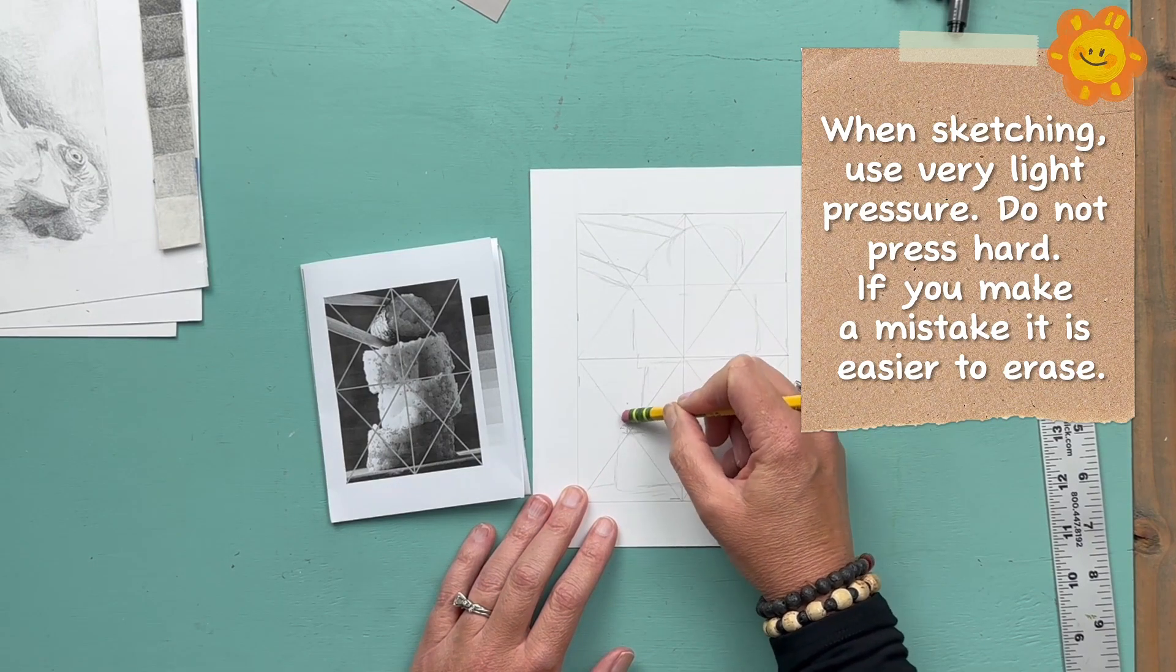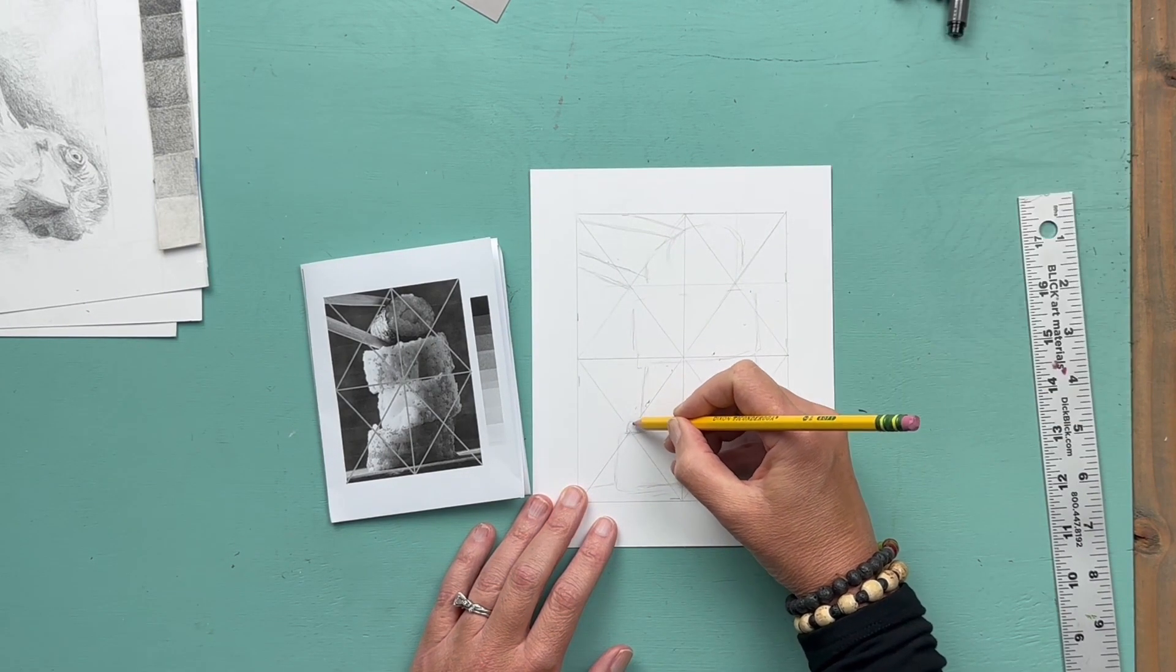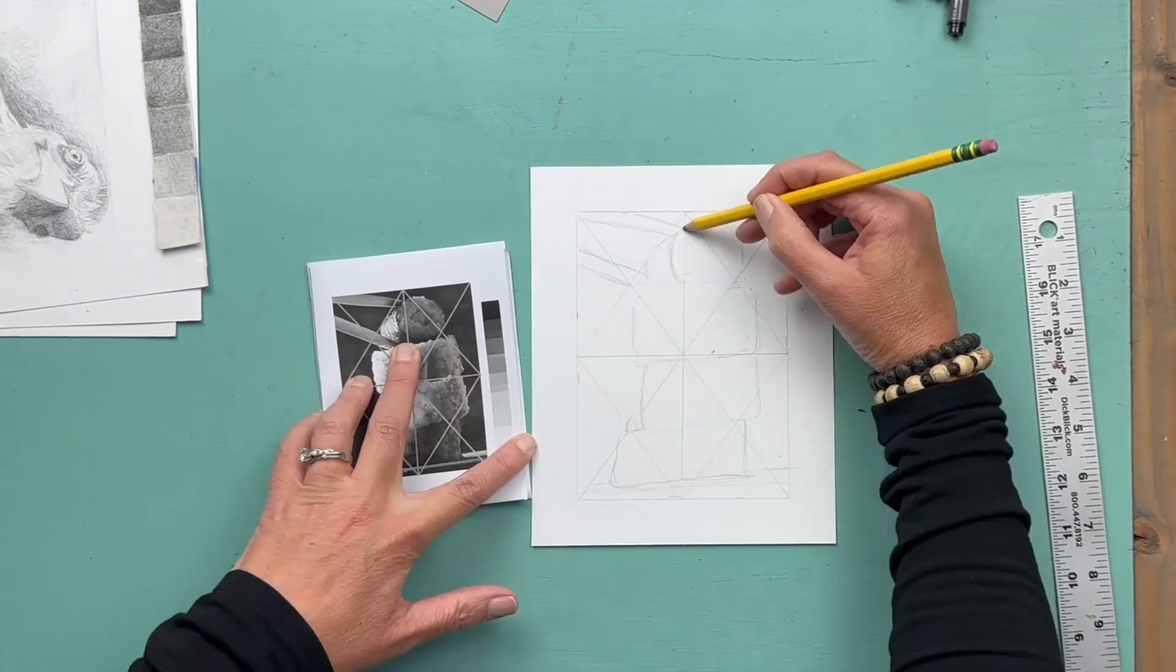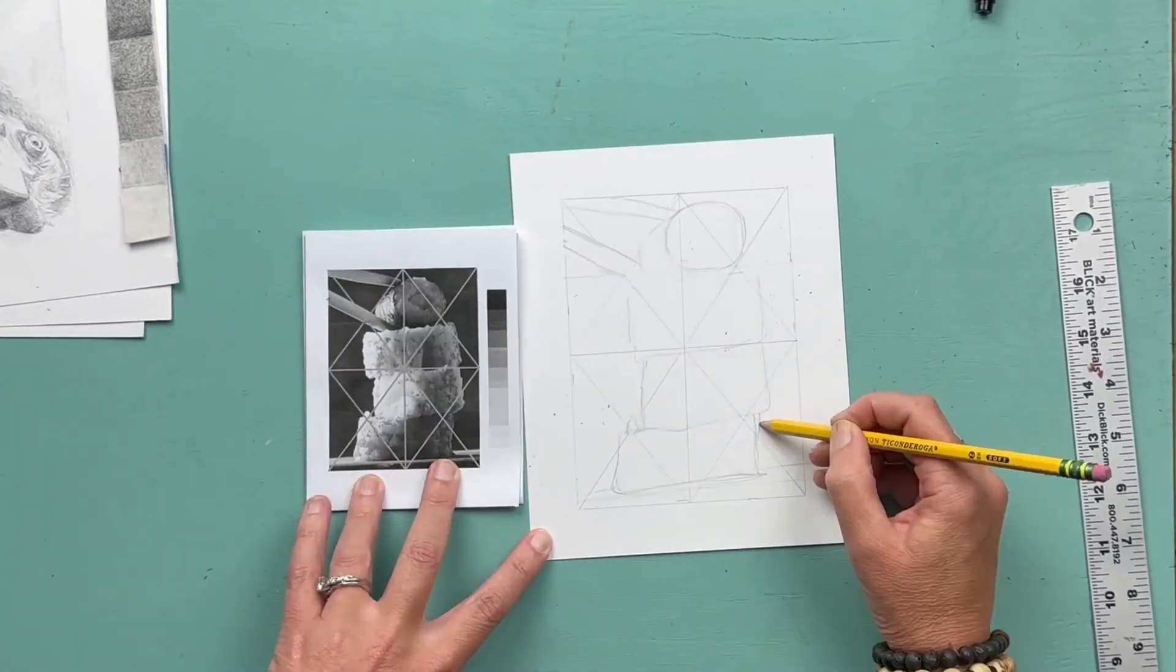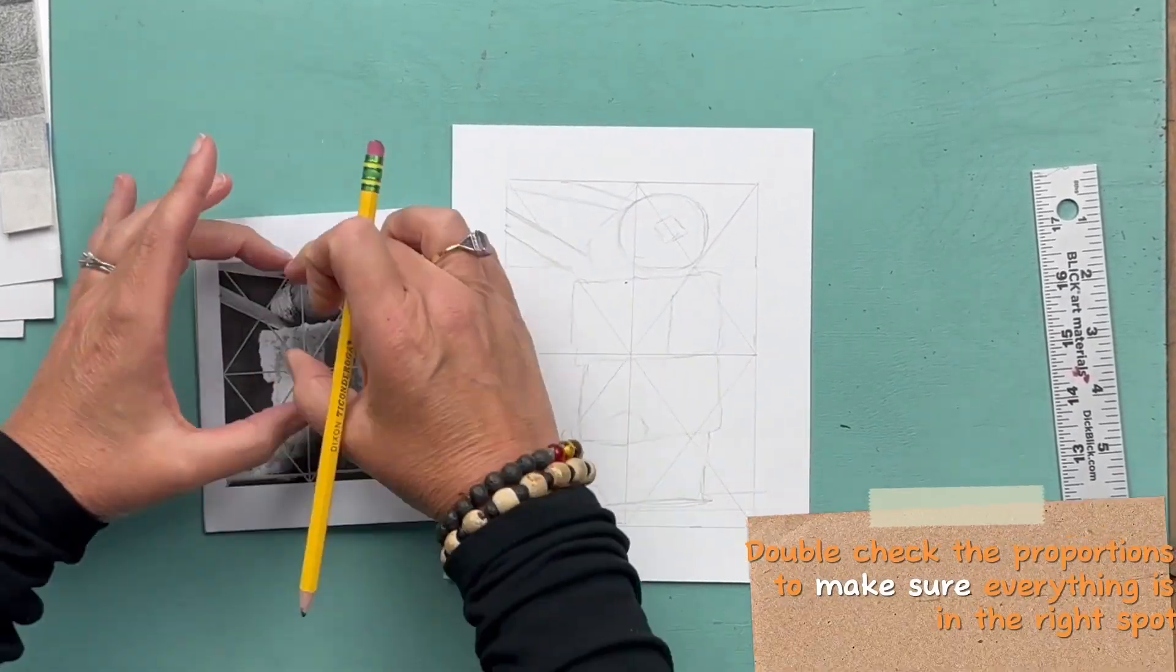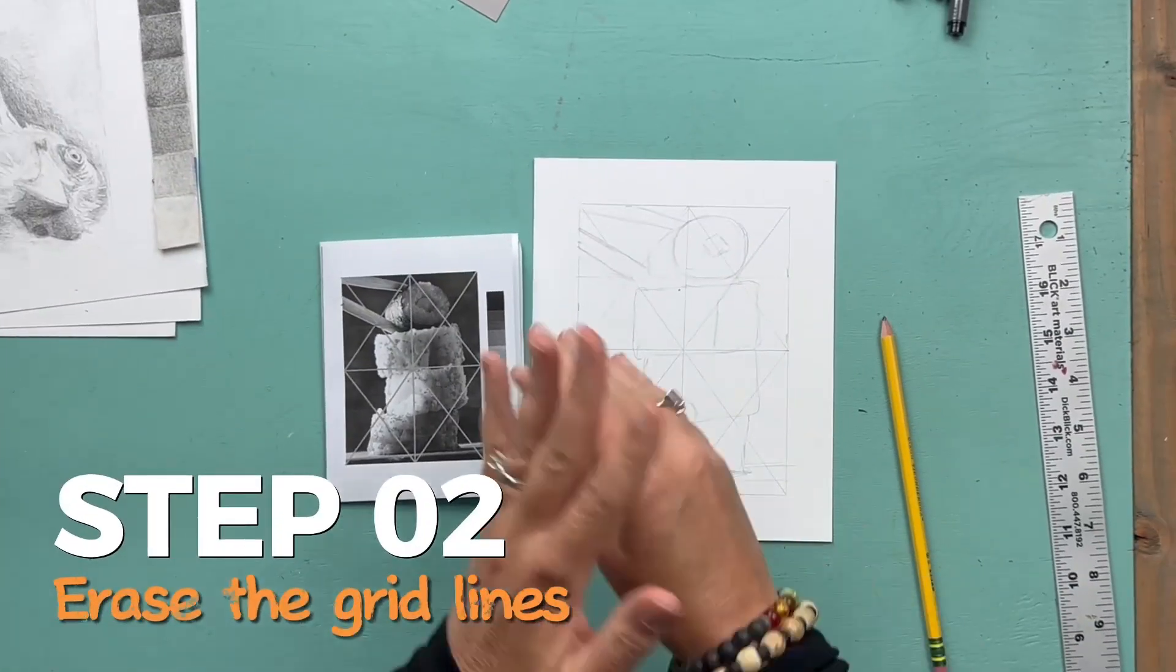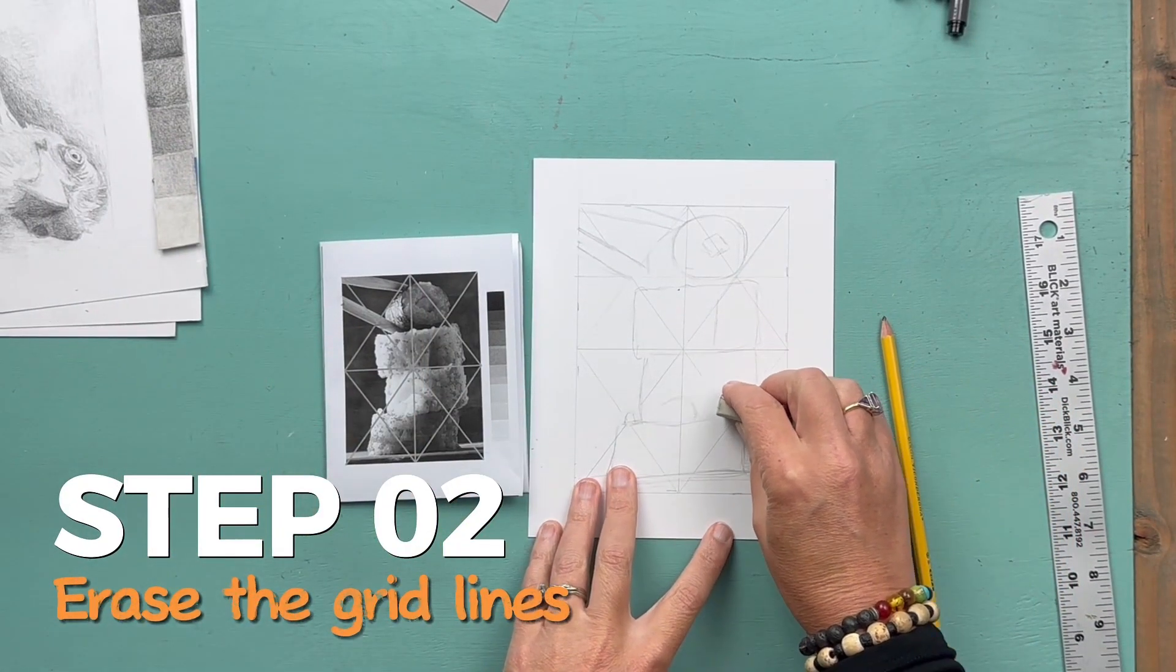I'm double checking everything. I'm working from larger shapes to smaller shapes, and once I'm happy with my drawing, I'm going to erase the grid lines and erase my drawing so that I can see it but it is barely visible.